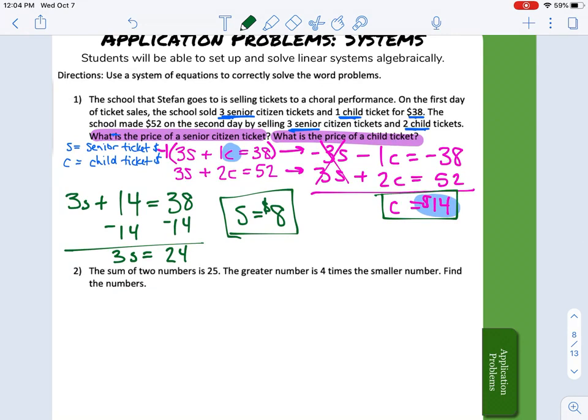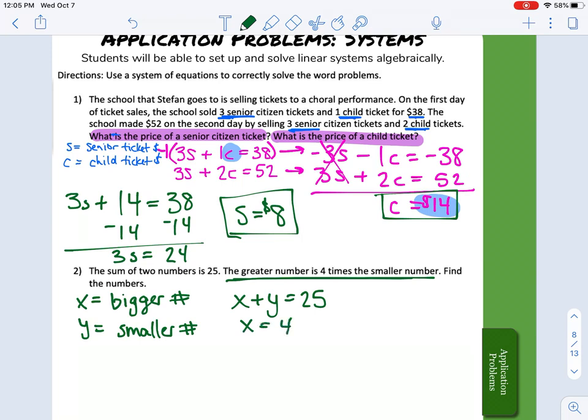Hopefully that one wasn't too bad. This next one: the sum of two numbers is 25. So a number x plus a number y must equal 25, right? And the greater number is 4 times the smaller number. So we'll label our variable x as being the bigger or greater number, and y as being the smaller number. So we just need to write out the equation for this. X, the greater number, is four times the smaller number. So x equals 4y.